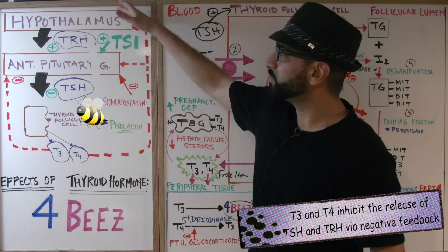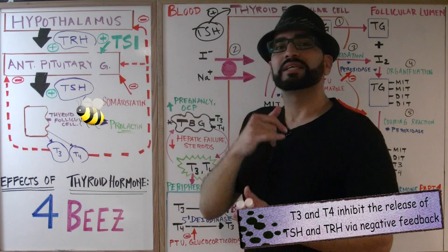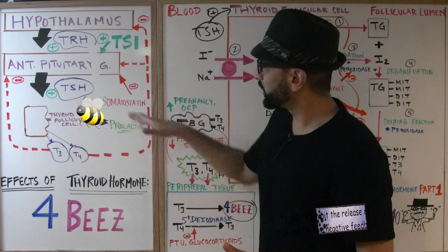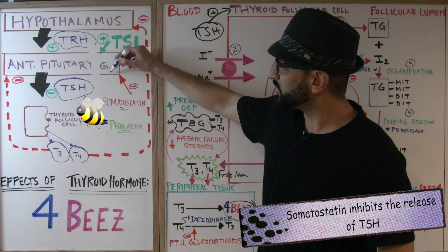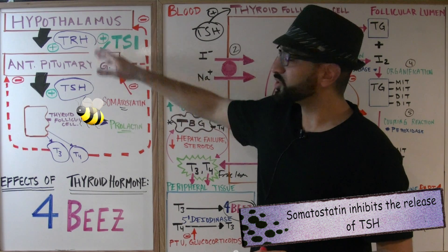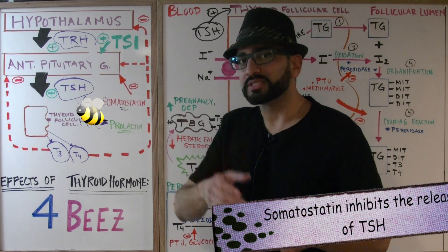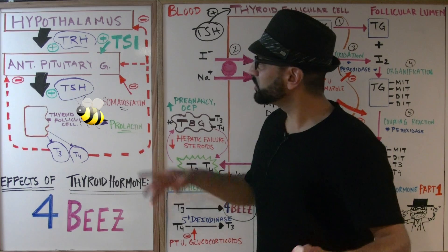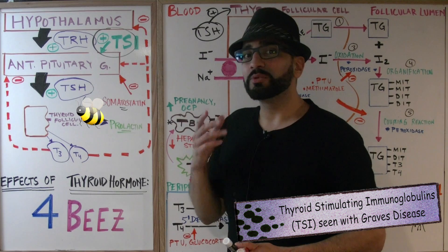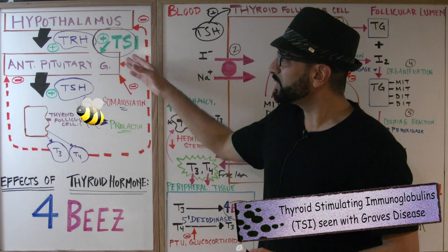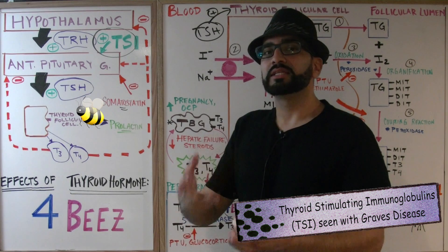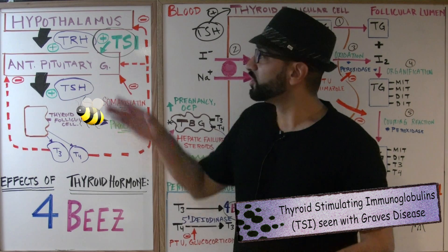What inhibits the release of T3 and T4? There is a negative feedback loop: as T3 and T4 increase in concentration, they go back to the hypothalamus and anterior pituitary gland, telling them not to release TRH or TSH. Somatostatin works on the anterior pituitary gland to decrease the response to TRH so that less TSH is released.